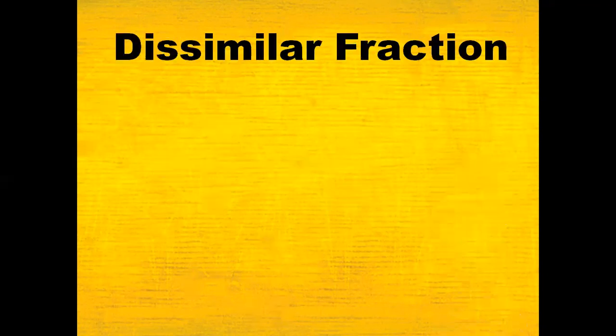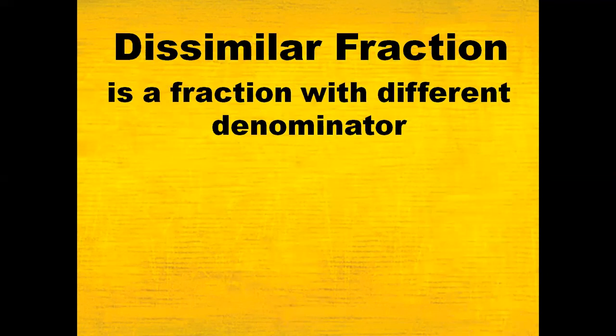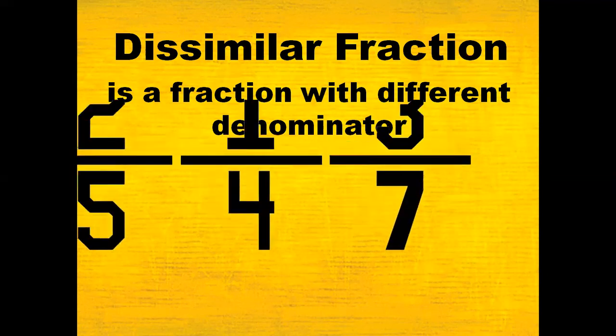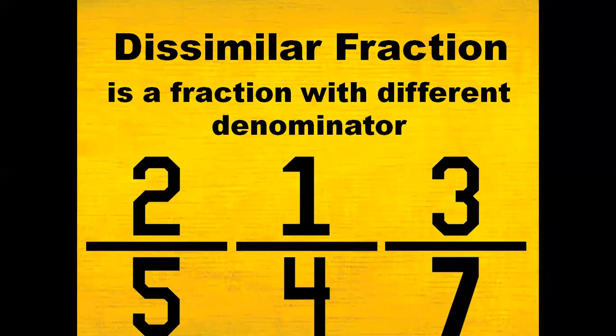Now, what is a dissimilar fraction? A dissimilar fraction is a fraction with different denominators. For example, 2 fifths, 1 fourth, and 3 sevenths. They are dissimilar fractions because their denominators are not the same.